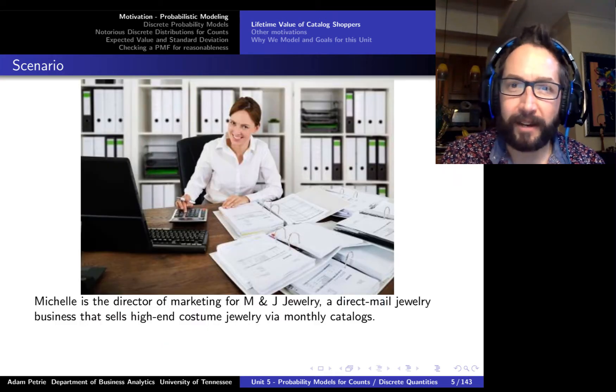We're going to take the viewpoint of Michelle, who's a director of marketing at M&J Jewelry, which is a direct mail jewelry catalog. Every quarter they send out a new catalog to a customer, and the customers order stuff and bring in money for the company. Michelle would like to target specific groups of customers with particularly high lifetime values or maybe those that are particularly high risk at churning.